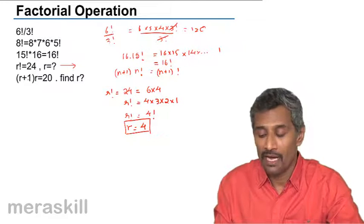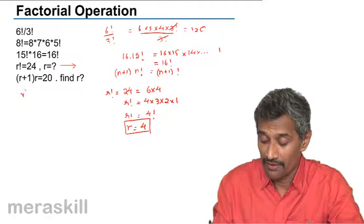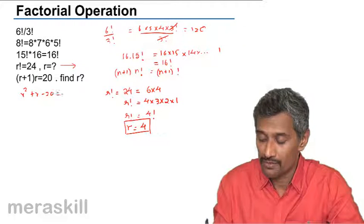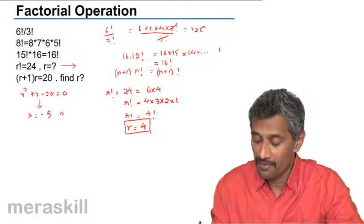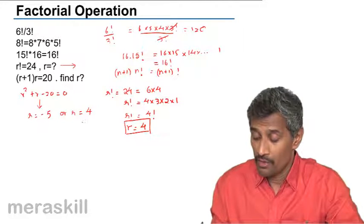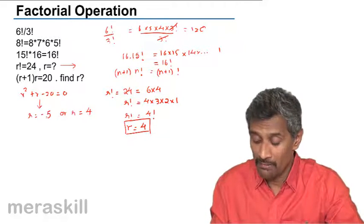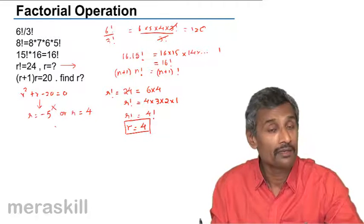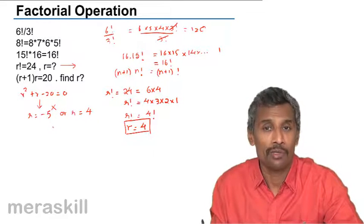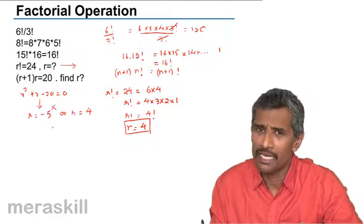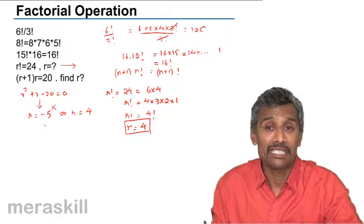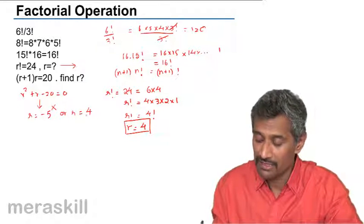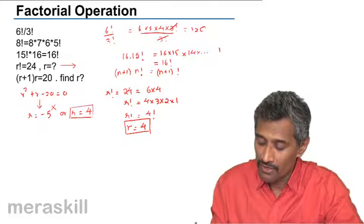If you open the bracket in (R+1) × R, it gives R² + R − 20 = 0. Solving this, you get R = −5 or R = 4. Now R = −5 must be discarded because we are dealing with the number of terms — R and N in any permutation or factorial concept must be a positive integer. So the only valid answer is R = 4.